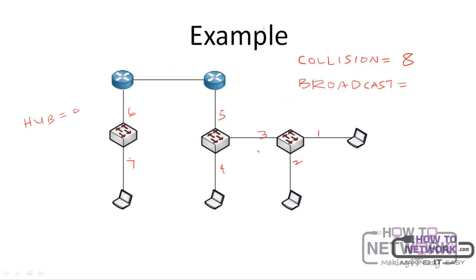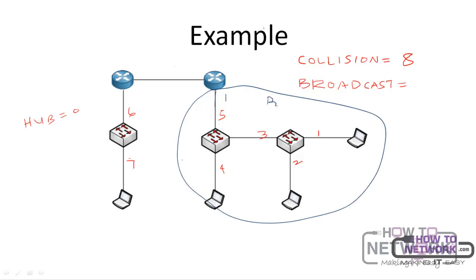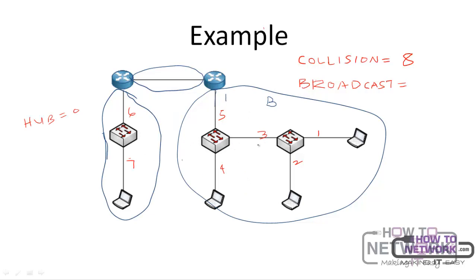Now how many broadcast domains do we have? We have two routers, so we count the router interfaces. The first interface gives us one broadcast domain — this whole connected segment is one broadcast domain. The second interface gives us another broadcast domain. And the third gives us a third. Notice that it doesn't matter how many switches you have — you could have two switches or even a hundred switches in one broadcast domain. The broadcast domain is only segmented by a router. So we have three broadcast domains and eight collision domains.